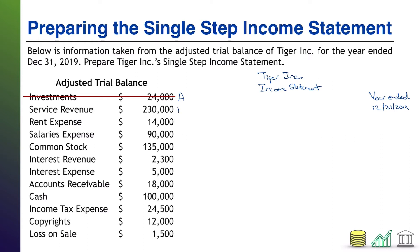Next up, service revenue — the name kind of gives it away. This is a revenue; it will definitely be on our income statement. Rent expense — the name gives it away. Salaries expense — the name gives that one away too. Common stock — all stock accounts go on the shareholder's equity section of the balance sheet, so I'm going to scratch it. Interest revenue and interest expense — the names give those away.